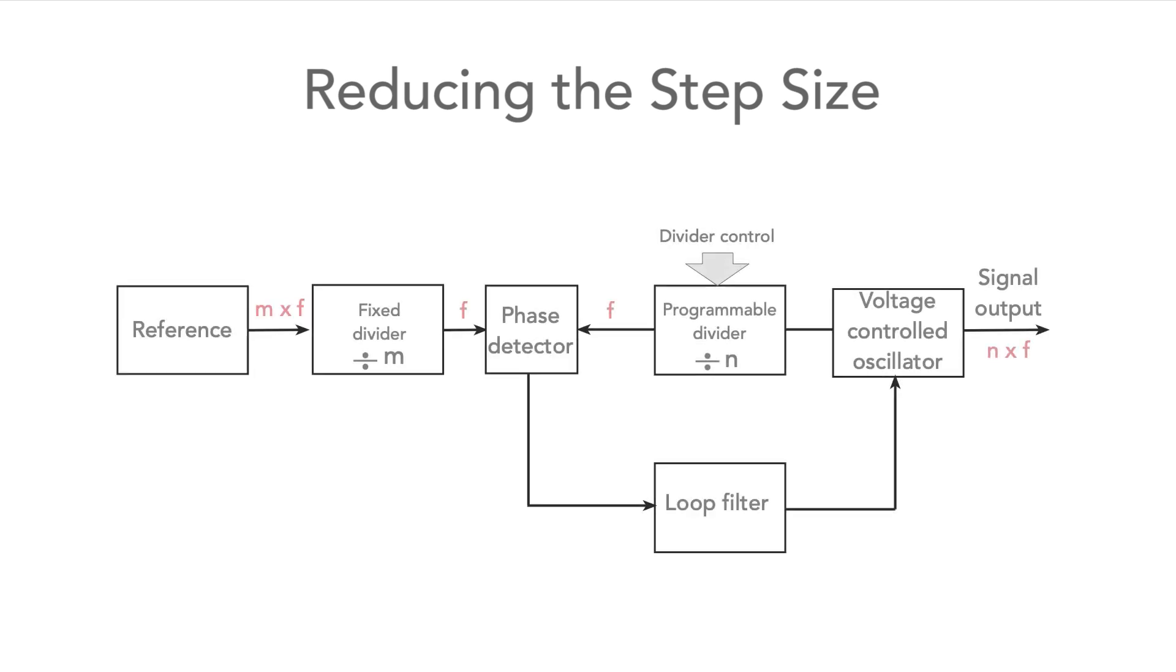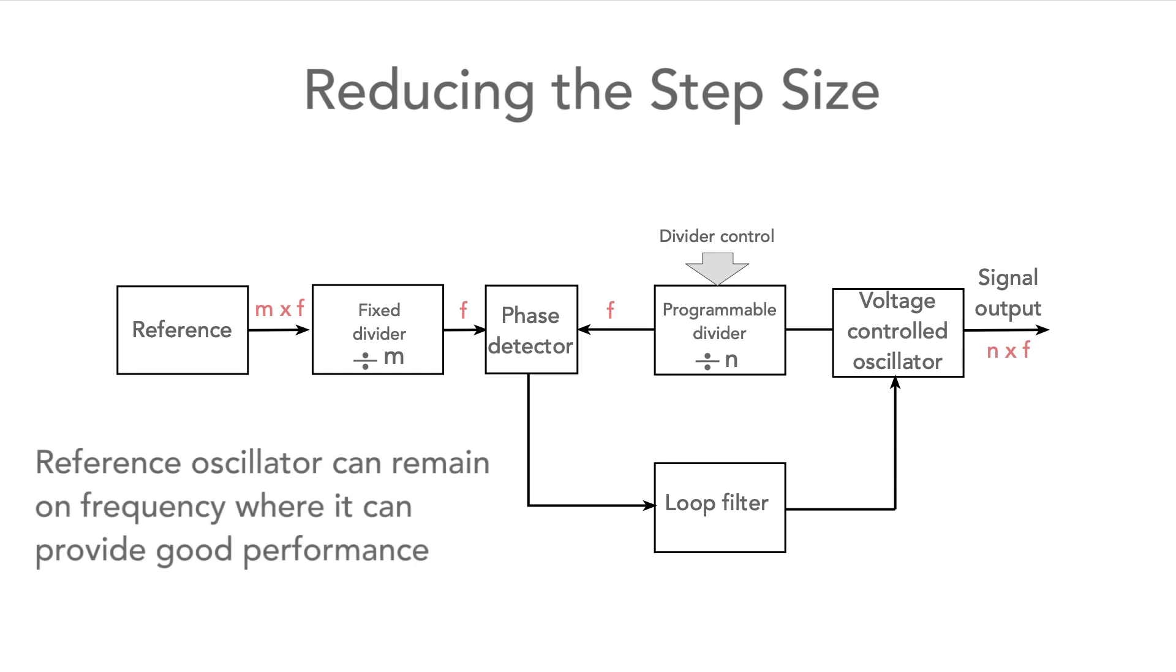To achieve this, a fixed frequency divider can be placed between the reference oscillator and the phase detector. In this way, the phase comparison frequency can be reduced to the required step increment, while also keeping the crystal oscillator running on a frequency where good performance can be achieved.